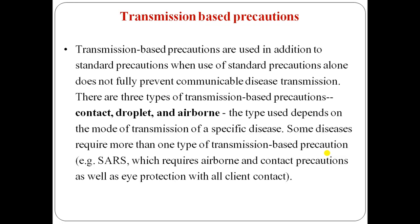Transmission-based precautions are used in addition to standard precautions when standard precautions alone do not fully prevent communicable disease transmission. There are three types of transmission-based precautions: contact, droplet, and airborne. The type used depends on the mode of transmission of the specific disease.